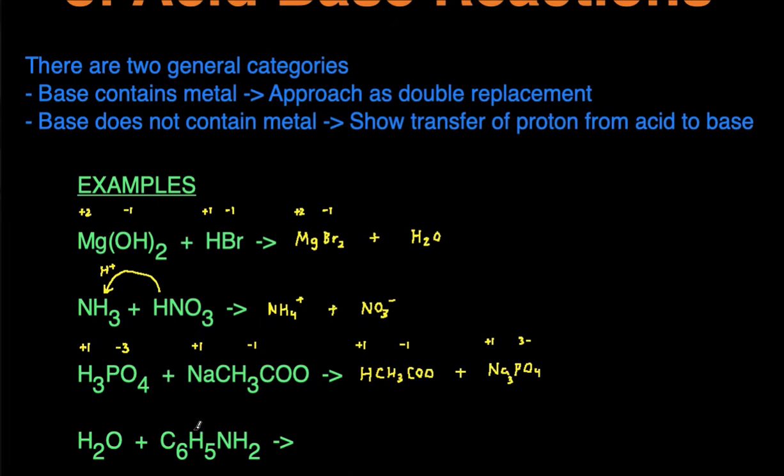And then last example we have water reacting with C6H5NH2. This time to help us predict the acid and the base, acids usually have H in front or have a positive charge. Since this one doesn't have an H in front nor a positive charge, this one's probably going to be a base and water is then going to act as an acid. So since water is acting as an acid, water is going to donate a proton and then the base is going to accept that proton.